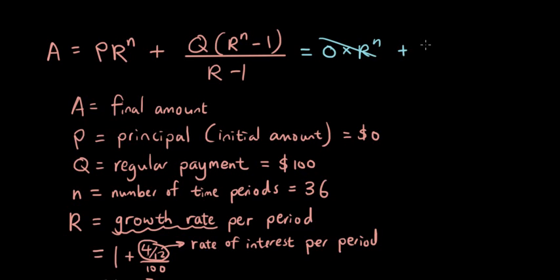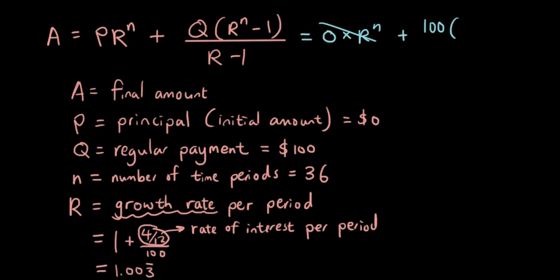Plus, Q is a hundred dollars times R to the power of n. So it's 1.003 recurring to the power of n, which is 36 minus 1. And then divided by 1.003 recurring minus 1.